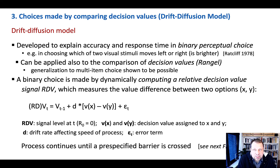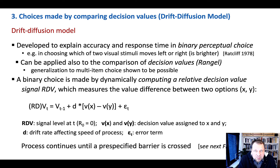The idea behind the drift-diffusion model is that there's a response time underlying decisions — sometimes longer, sometimes shorter — and this is meaningful. For instance, the difficulty of the task might influence decision times. There is also some stochasticity involved in evidence accumulation or binary choice.